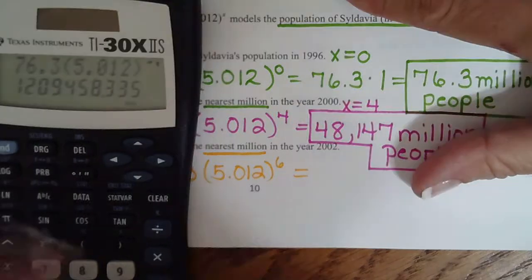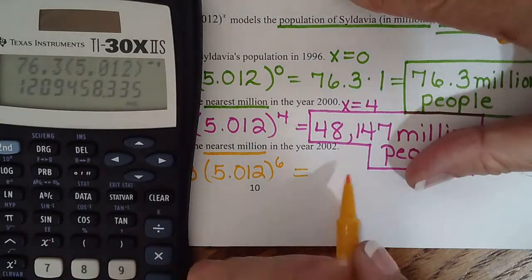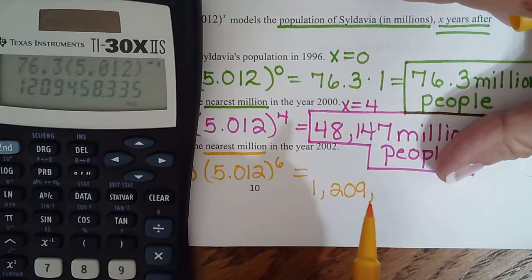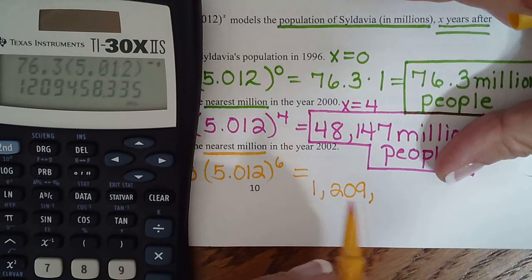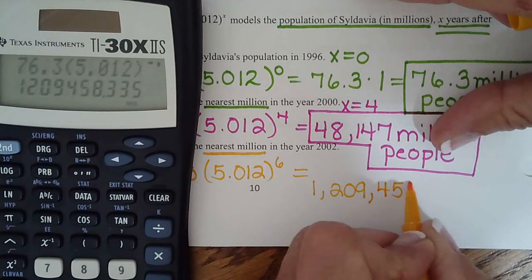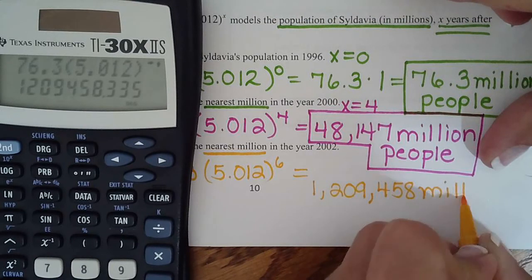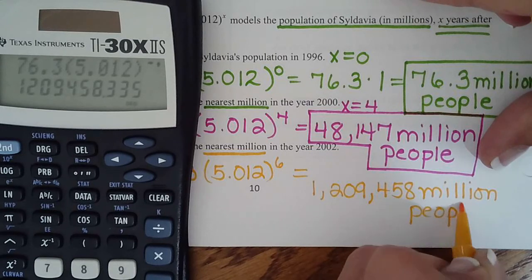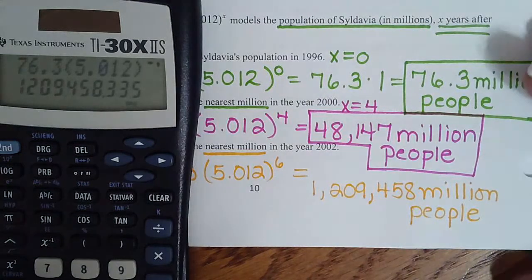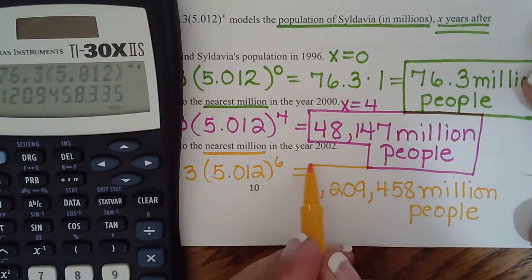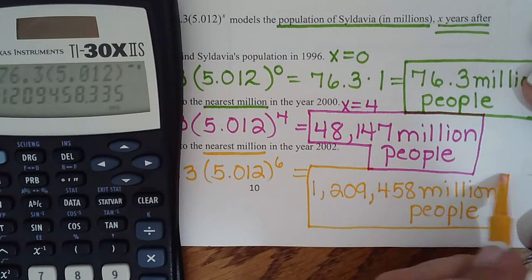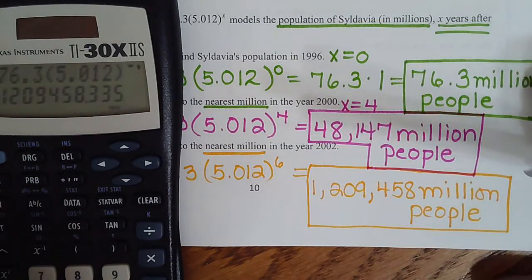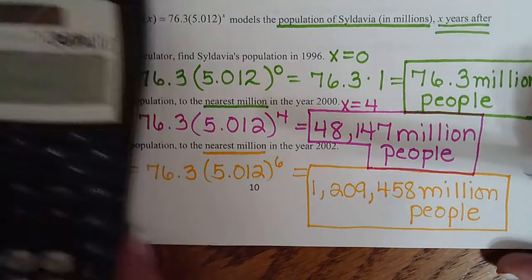Keep that right there. So 4, 5, 8, so it would be 1,209,458 million people. So it's a million, million. And there is our answer. Okay. Let's go ahead and go to the back page.